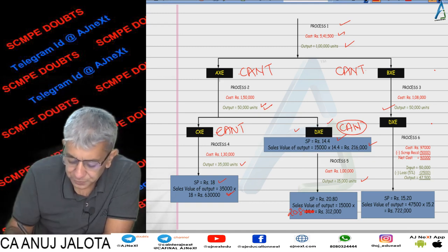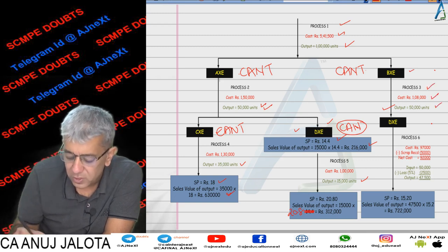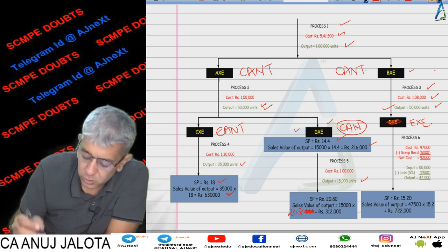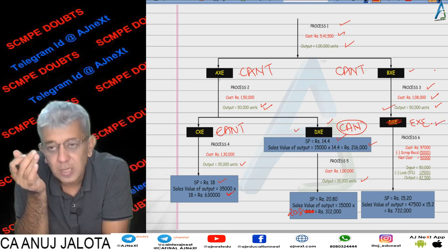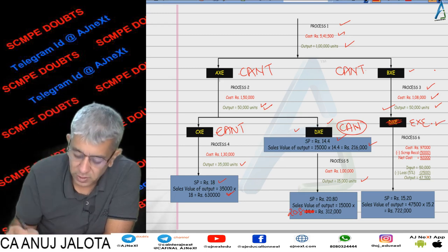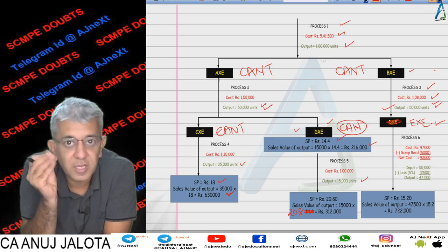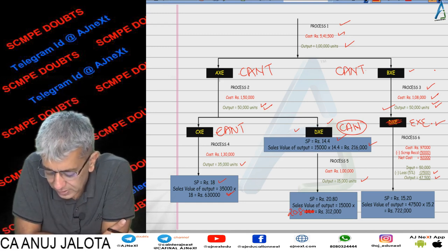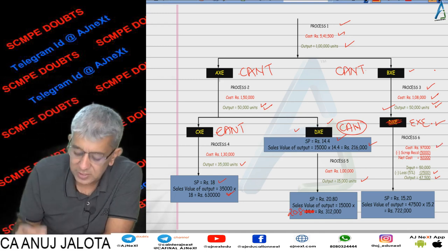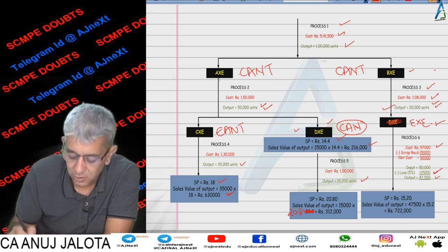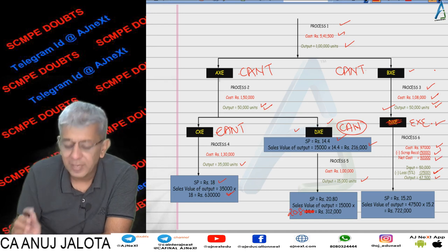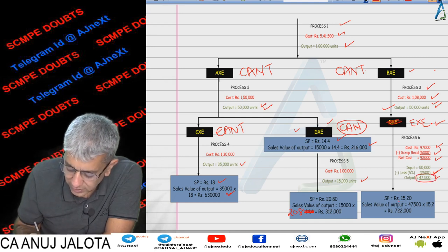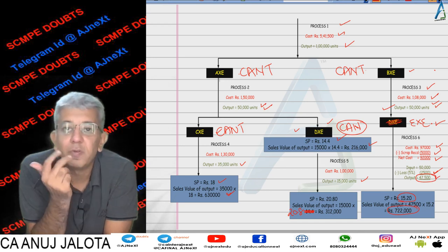BXC cannot be sold here; it goes to Process 3, which converts it into a product called EXE. EXE also cannot be sold immediately — it goes to Process 6. In Process 6, a loss of 5% occurs: 50,000 less 5% = 2,500 units lost, giving output of 47,500 units. Process 6 cost is ₹97,000, but those 2,500 lost units can be scrapped at ₹2 each, recovering ₹5,000. So net cost is ₹92,000. The 47,500 units are sold at ₹15.2, giving sales value of ₹7,22,000.